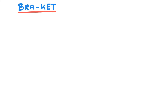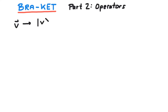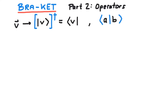The bra-ket notation is a different way to denote vectors. We write a vector inside a so-called ket. In order to calculate an inner product, we perform a Hermitian conjugation and get a bra vector. A bra multiplied onto a ket gives a number.